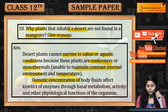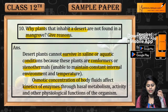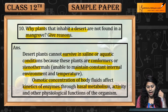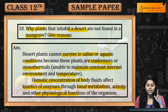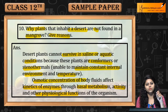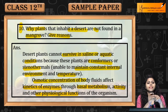Osmotic concentration affects the kinetics of enzymes through basal metabolism, activity, and other physiological functions of the organism. This is why desert plants are not found in mangroves. This was question number 10.